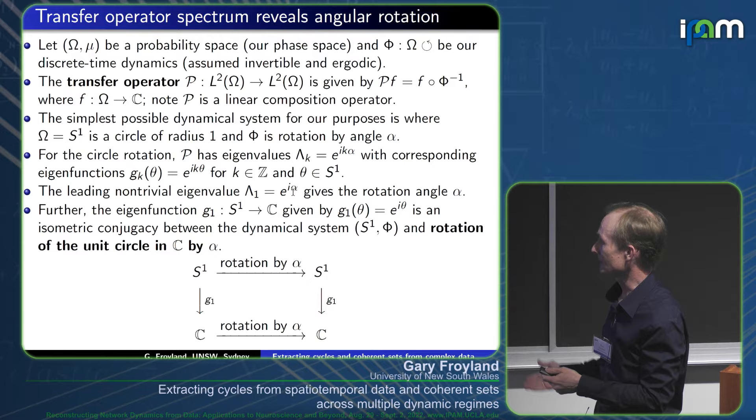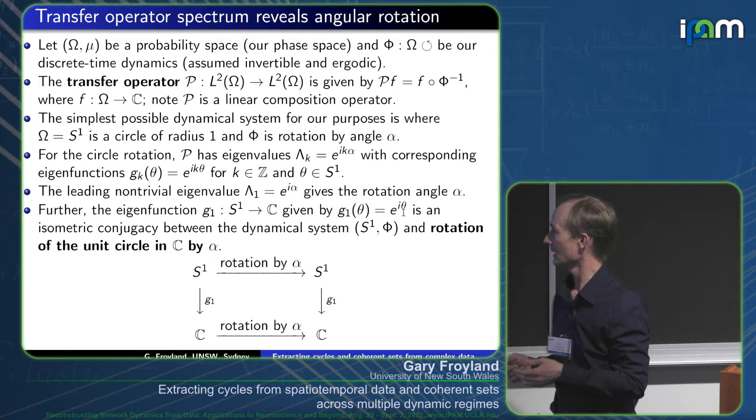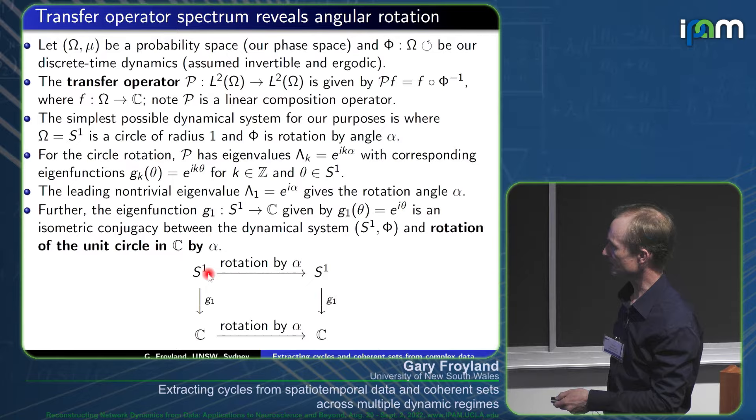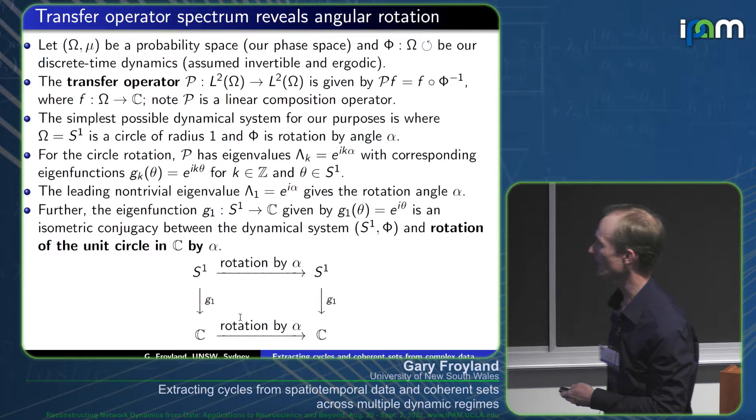The corresponding eigenfunction g_1 is e^{iθ}, and as θ runs from 0 to 2π, e^{iθ} traces out a circle in the complex plane. So you have a conjugacy between your geometric circle (the phase space) and the range of the complex eigenfunction in the complex plane, both rotating by α — here by multiplication by the eigenvalue. That's nice, but not so practical. Let me describe a useful generalization.